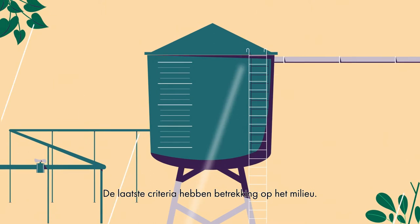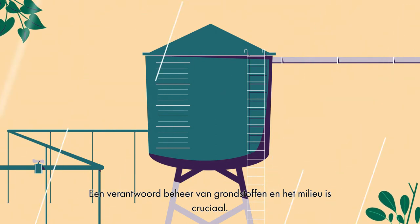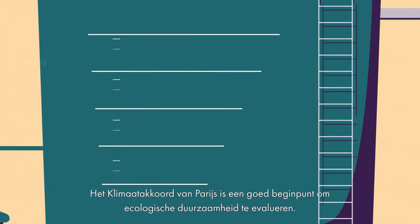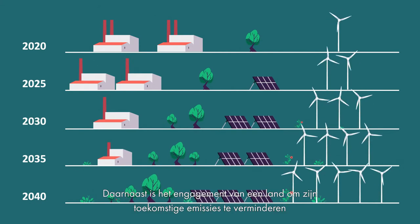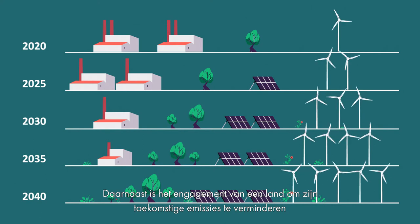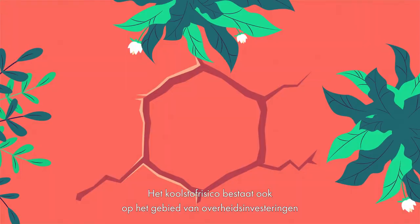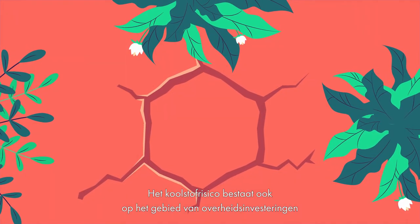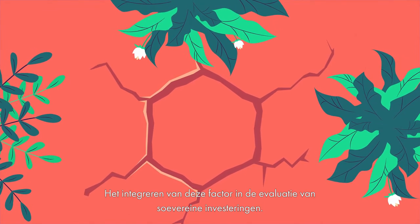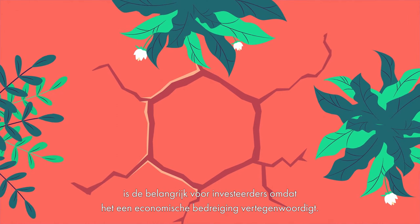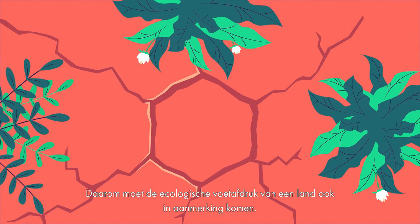The last criteria relates to the environment. Responsible management of resources and of the environment are crucial. The Paris Agreement may be an essential criterion in assessing a country's environmental sustainability. A country's commitment to reducing its future emissions provides a good starting point for evaluating its future stability. Carbon risk also exists in the sphere of sovereign investments, and integrating this factor into the sovereign investment evaluation is key, as it represents an economic threat. A country's carbon footprint is therefore also to be considered.